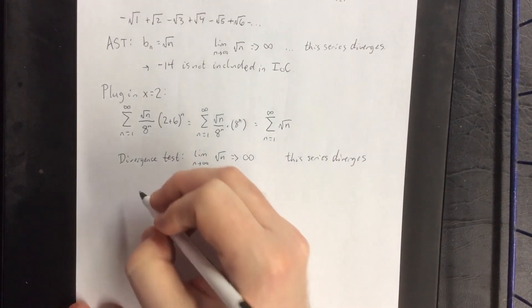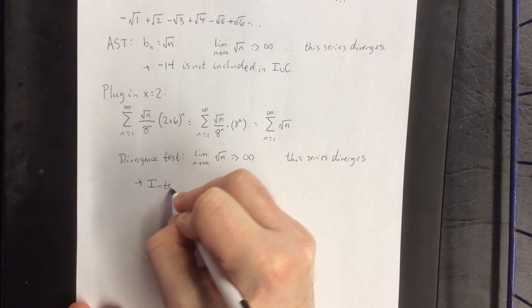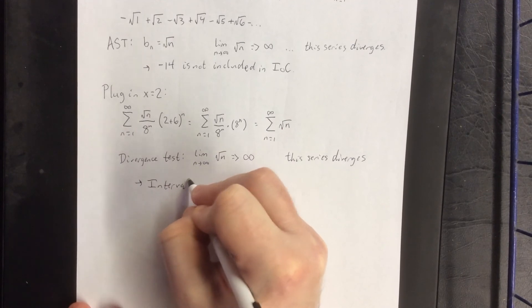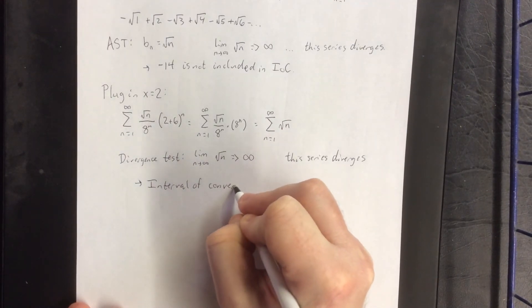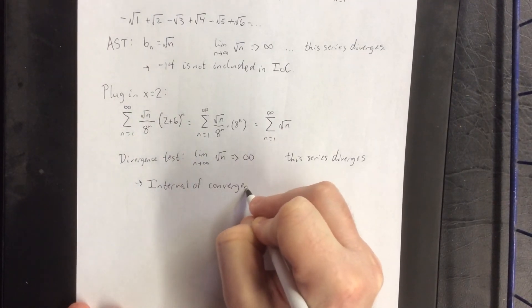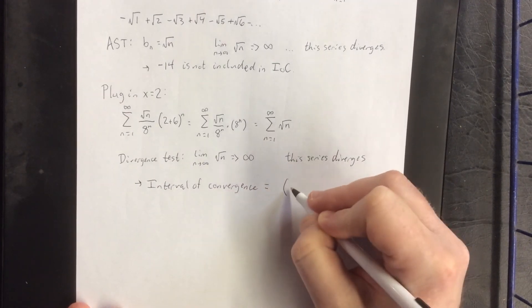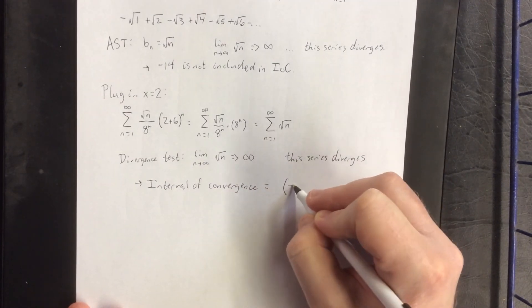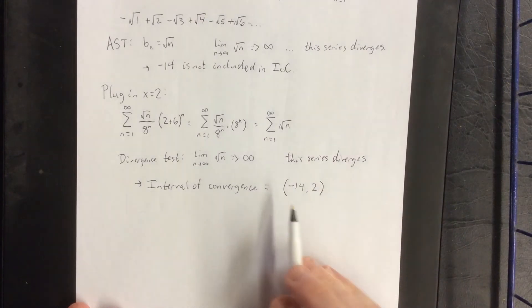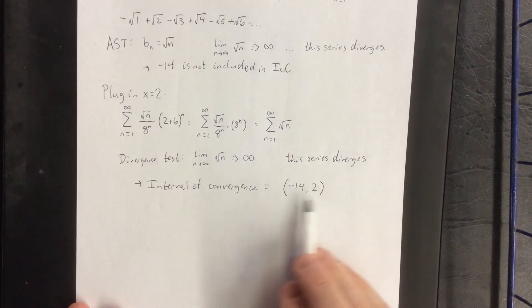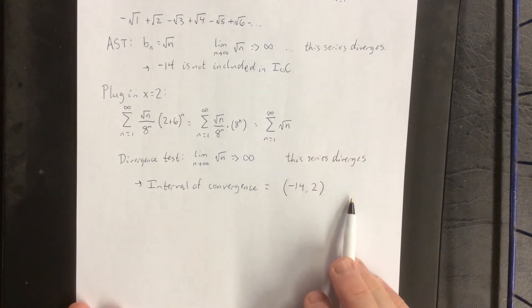As a result, our final answer for the interval of convergence will be the open interval from negative 14 to positive 2. Open on both ends because the series diverged when we plugged in both endpoints, so neither endpoint can be part of the interval of convergence.